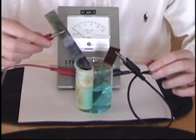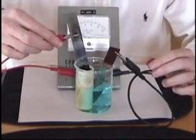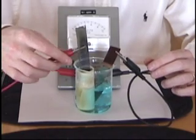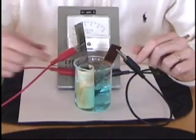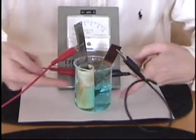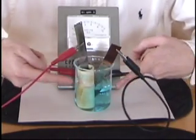So when the zinc goes into the zinc nitrate, the copper in the copper nitrate, and you've got a connection between the two made by the porous cup, allowing movement of ions through the cup,